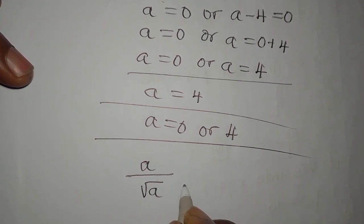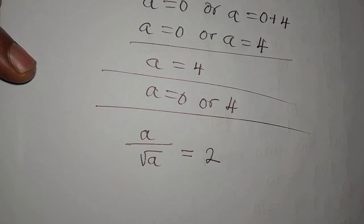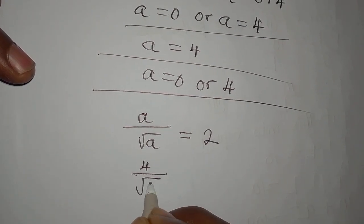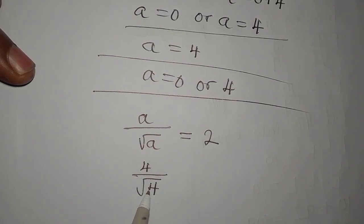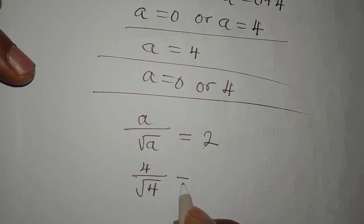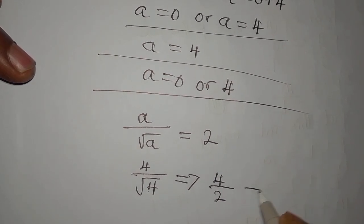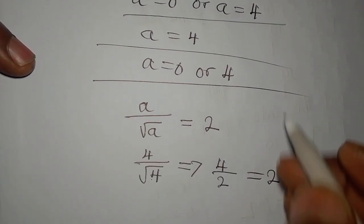Let's put in 4 and see what we're going to have. This is 4 over square root of 4. Square root of 4 is 2, and this will give us 4 over 2, which gives us 2. So this satisfies very well.